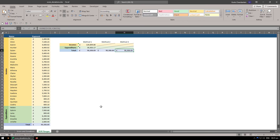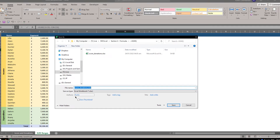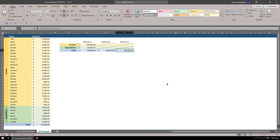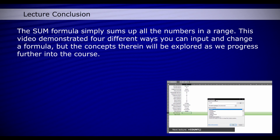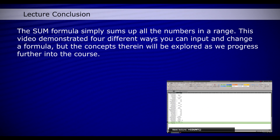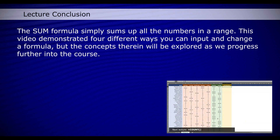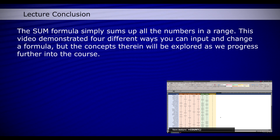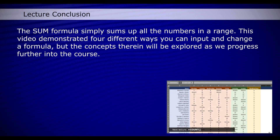That pretty much covers the basics of the SUM formula. You can't really go wrong — there are various different options available. I'm going to save this as score_donations_sum. If you're still not sure, I'd recommend taking a fresh Excel document, putting some numbers in cells A1 through A5, and in A6 try using a SUM formula. In the next lecture we're going to look at the COUNT formula — it should be a straightforward and easy video, so I look forward to taking you through it.